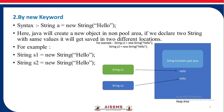The second way is by using the new keyword. The syntax is: String a = new String("hello"). Here, Java will create a new object in the non-pool area. If we declare two strings with the same value, they get saved in two different memory locations. For example, String s1 = new String("hello") and String s2 = new String("hello") — s1 and s2 have the same values, but they are stored at different memory locations in the heap area.